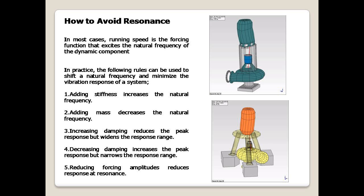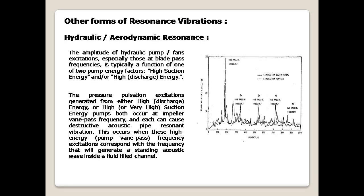How to avoid resonance: in most cases, running speed is the forcing function that excites the natural frequency of the dynamic component. The following rules can be used to shift a natural frequency and minimize the vibration response: (1) adding stiffness increases the natural frequency; (2) adding mass decreases the natural frequency; (3) increasing damping reduces the peak response but widens the response range; (4) decreasing damping increases the peak response but narrows the response range; (5) reducing forcing amplitudes reduces response at resonance.